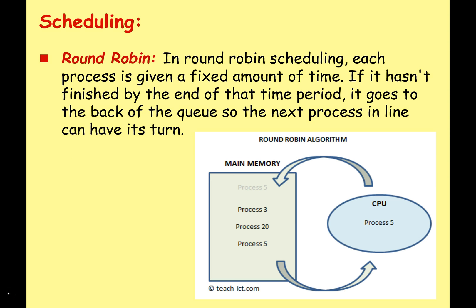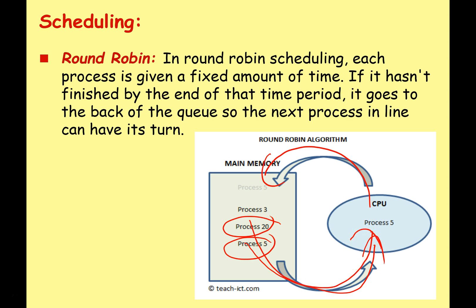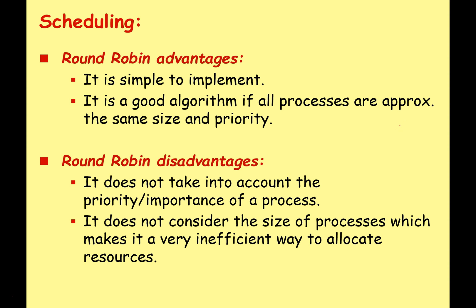Let's start with round robin — the simplest algorithm. In round robin scheduling, each process is given a fixed amount of time. If it hasn't finished by the end of that time period, it goes to the back of the queue so the next process in line can have its turn. As shown in this diagram, process five gets to go into the CPU, is given a limited number of processor cycles, and when that number of cycles is completed — even if the process hasn't finished — it goes to the back of the queue and the next process, process 20, gets its turn.